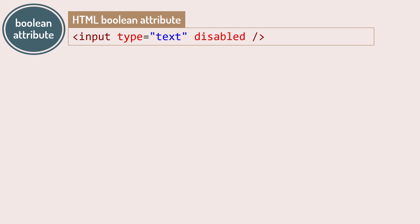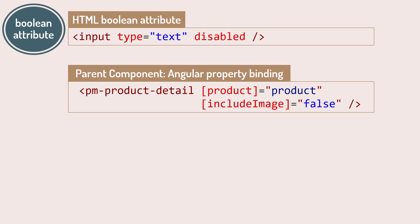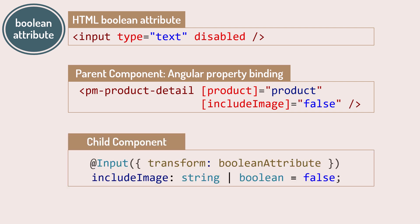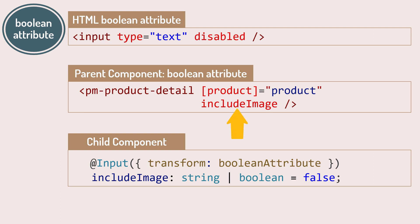For example, an input element is disabled using an HTML boolean attribute. If we wanted to create a boolean input property previously, we would need to use binding — the parent component had to bind to the child component's input property and assign a value of true or false. But not anymore. By using the built-in booleanAttribute transform function, we can now use HTML boolean attribute syntax. When the attribute is present, the value is true; if the attribute is not present, the value is false.